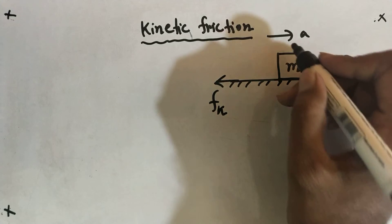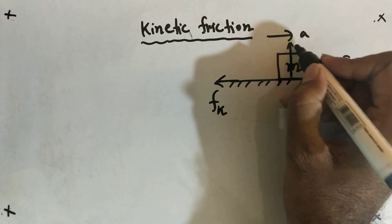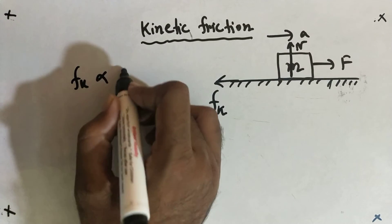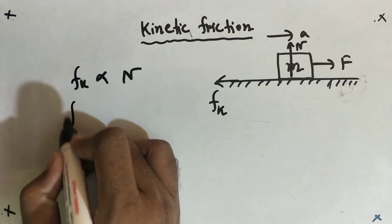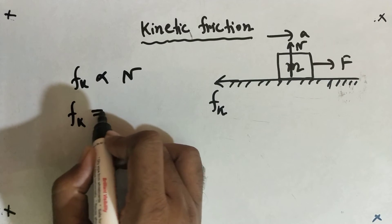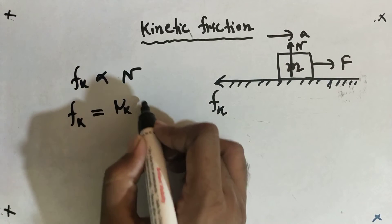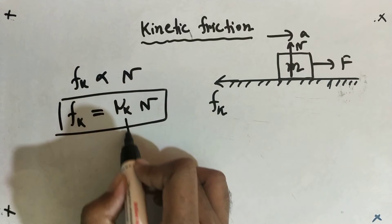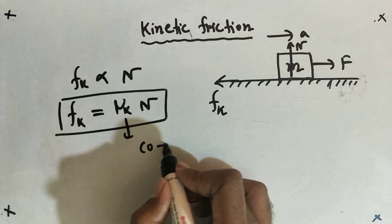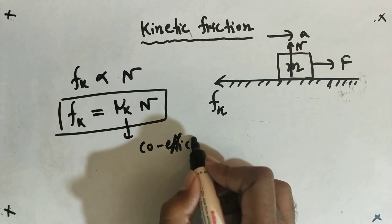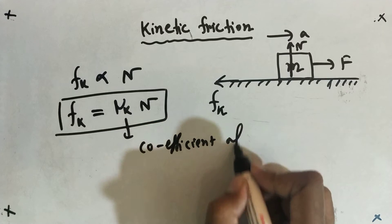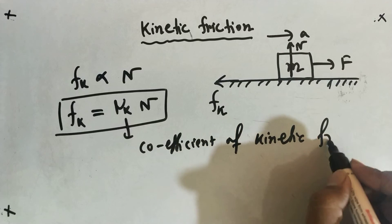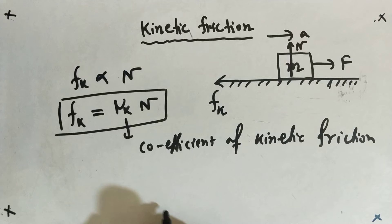This kinetic frictional force will also be proportional to N. So Fk is proportional to N, and if we talk about the coefficient of friction, it is denoted by μk. So Fk = μk × N. This μk is the coefficient of kinetic friction.